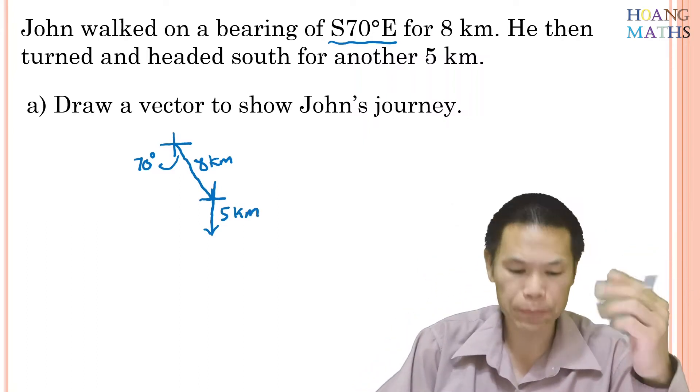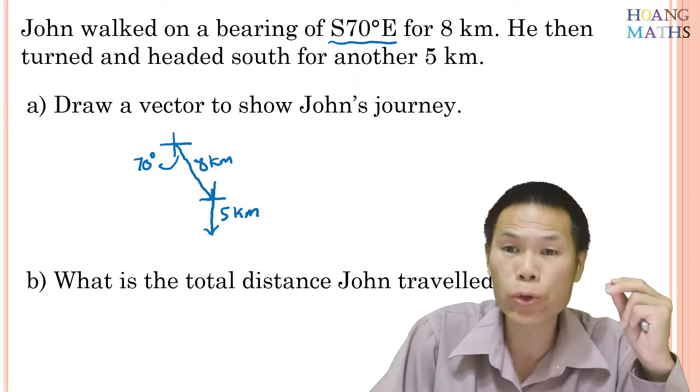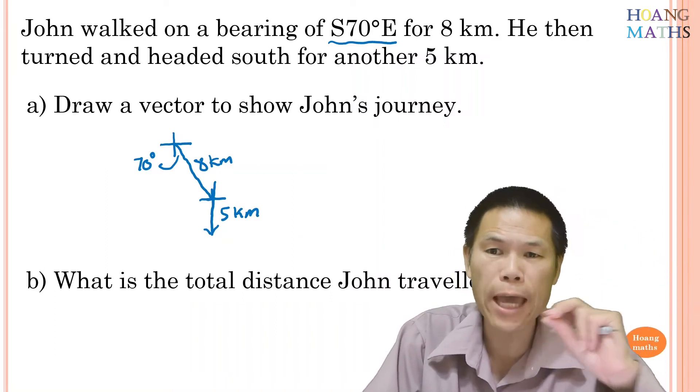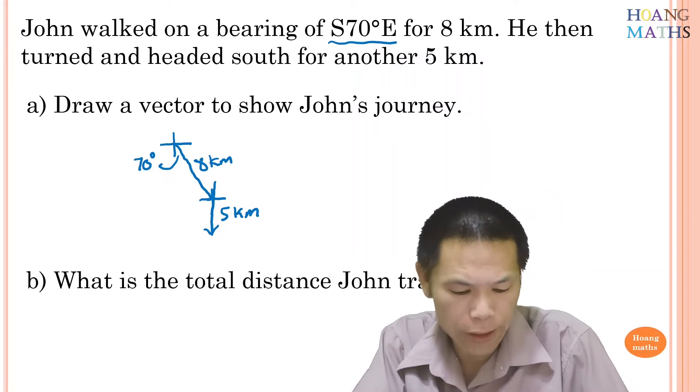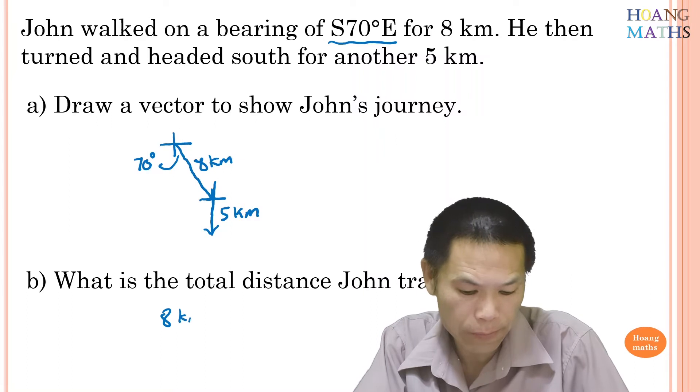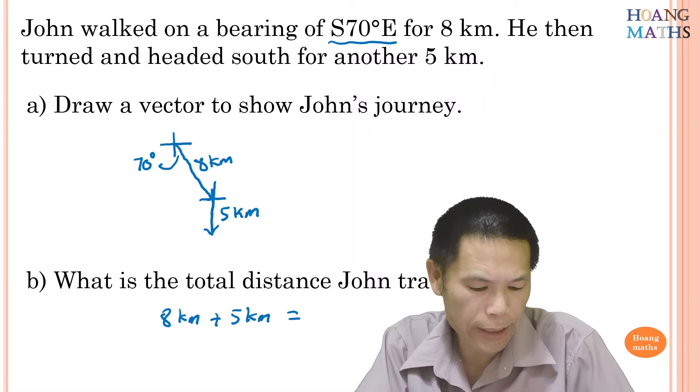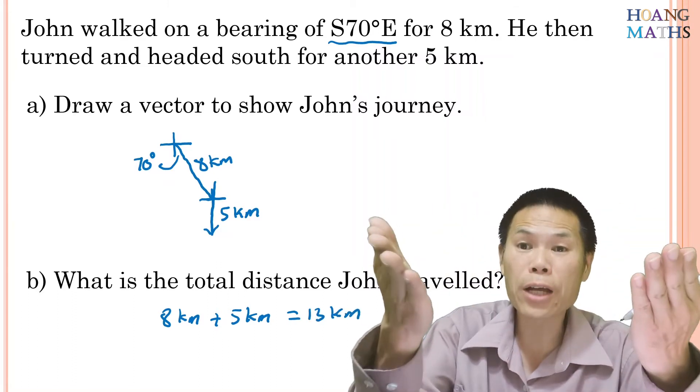Part B: what is the total distance John traveled? So the total distance, we just add all the distance together. So the first leg, he traveled 8 kilometers, and then we add 5 kilometers. So that is 13 kilometers. There you go.